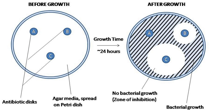It uses antibiotic discs to test the extent to which bacteria are affected by those antibiotics. In this test, wafers containing antibiotics are placed on an agar plate where bacteria have been placed, and the plate is left to incubate. If an antibiotic stops the bacteria from growing or kills the bacteria, there will be an area around the wafer where the bacteria have not grown enough to be visible. This is called a zone of inhibition.